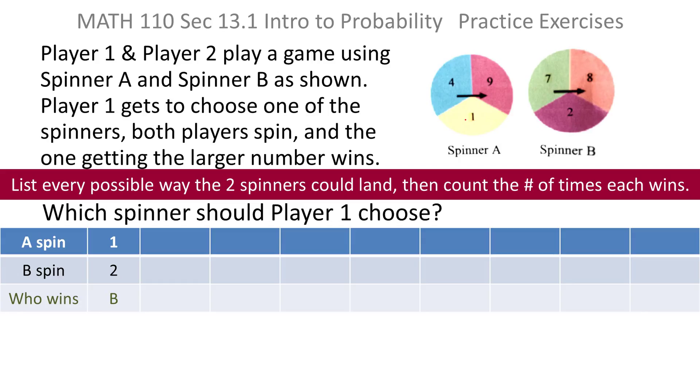Then I keep going. I've matched spinner A's 1 with spinner B's 2. What about matching spinner A's 1 with spinner B's 7? Again, 7 is larger than 1, so spinner B wins again.